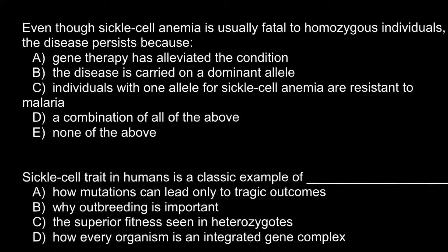Even though sickle cell anemia is usually fatal to the homozygous individuals, the disease persists because: answer A, gene therapy has alleviated the condition; B, the disease is carried on the dominant allele; answer C, individuals with one allele for sickle cell anemia are resistant to malaria; D, a combination of all the above; and E, none of the above.